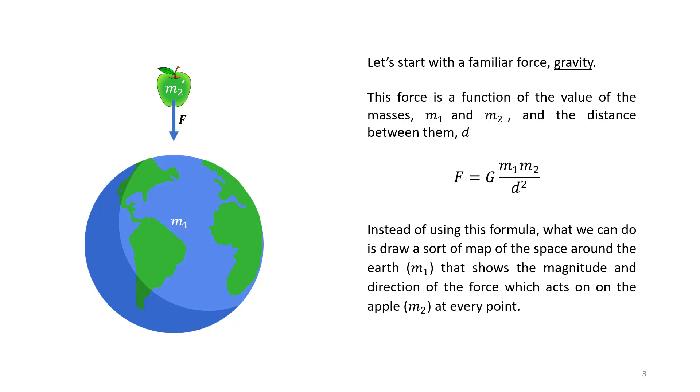We can use a simple formula to work out how strong the gravitational force that acts on our apple is. This is a function of the mass of the apple, m2, the mass of our planet, m1, the distance between the two objects, d, and the gravitational constant, g.